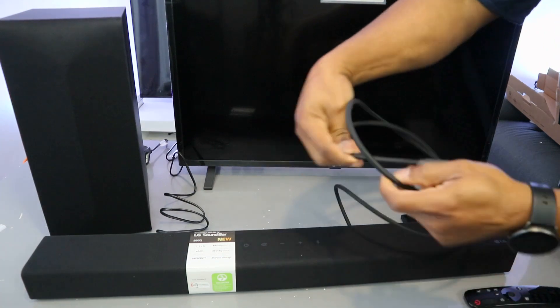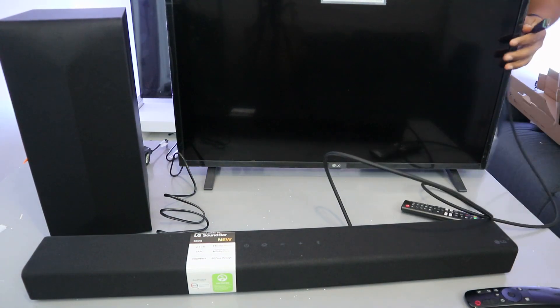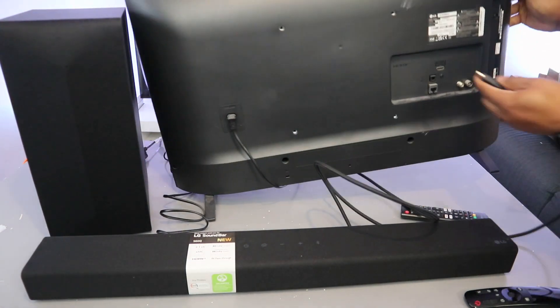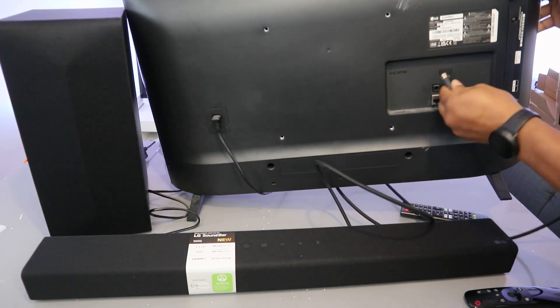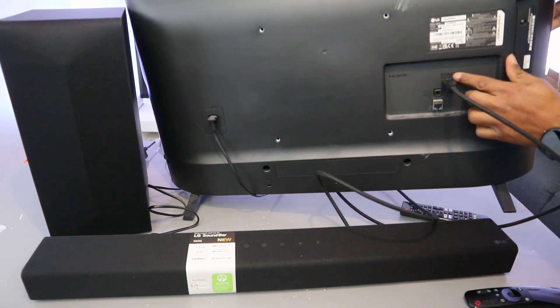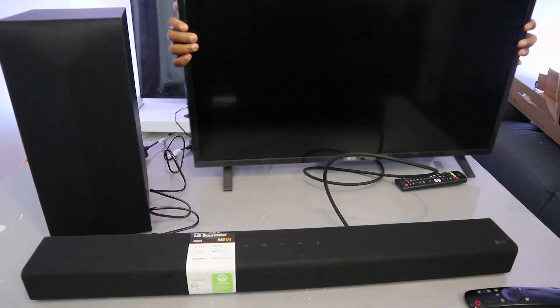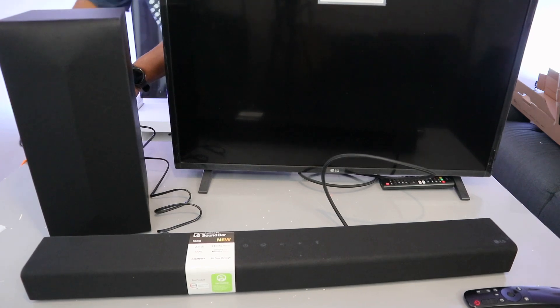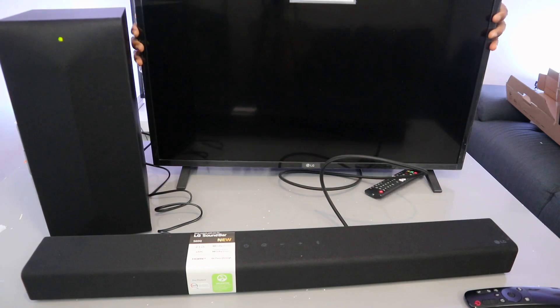Now take the other end of the cable to the back of your TV where it's written HDMI in 2 eARC. Plug the soundbar back on to the power, and also plug the TV and the subwoofer.